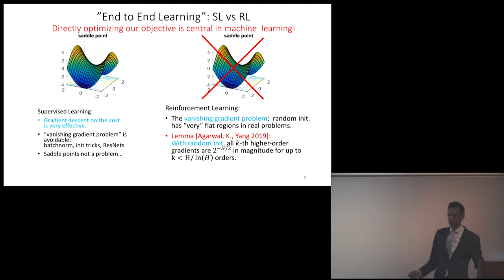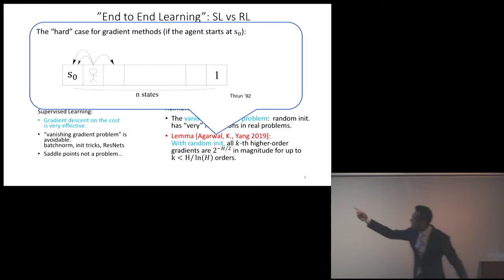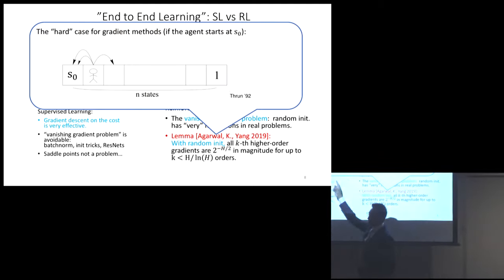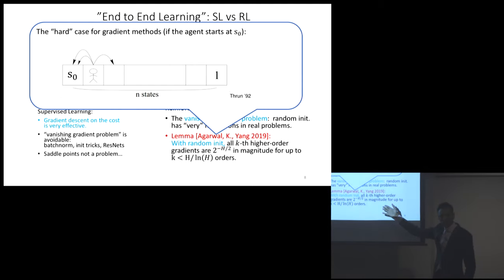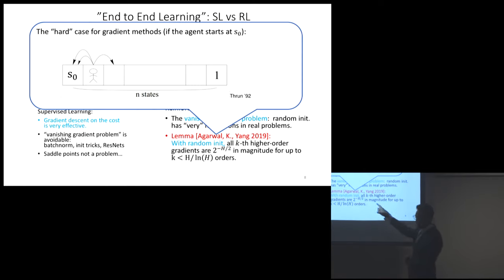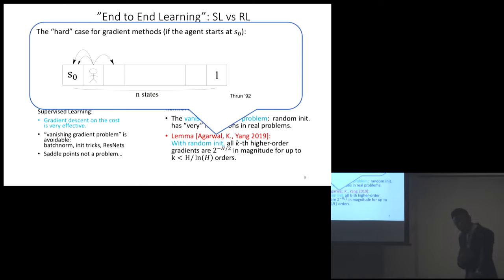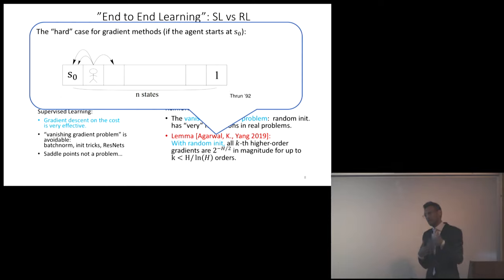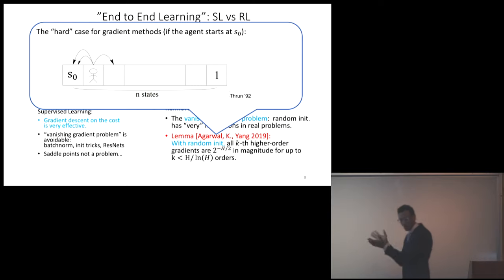But in RL, saddle points and vanishing gradients are very, very real. You can't just run gradient descent on your objective function. Here's an old example: a world where two actions take you to the left and one action takes you to the right. You can actually show that the true gradient is exponentially small in the horizon, because if you start randomly you're always going to the left. And even worse, essentially up to a very high order, all the higher-order gradients are super flat as well. So there's no off-the-shelf reason to believe any reasonable optimization algorithm, even given exact gradients, is going to work in this setting.